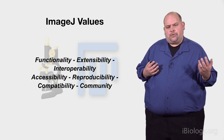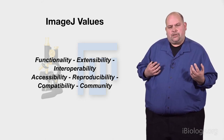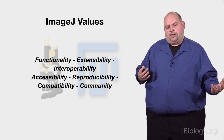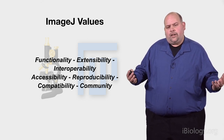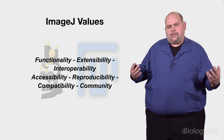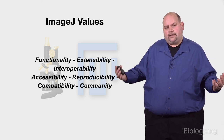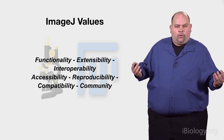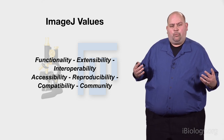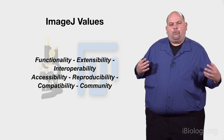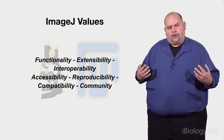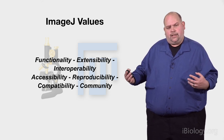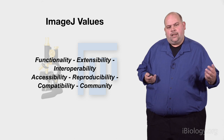It's important to understand the values that drive the ImageJ project. We want to be functional, extensible, and interoperable with others. We want to be accessible — freely downloadable and usable at no cost. We want transparency, so you know what's happening to your data. We want reproducibility, so you and your colleague get the same result. We want compatibility across operating systems and workflows, whether on the cloud or your own computer. And we want community — sharing problems and successes together to progress efficiently.